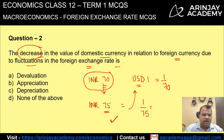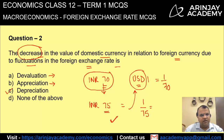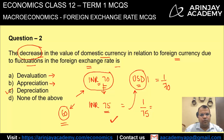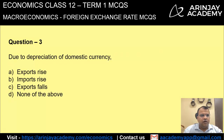This decrease in value is known as depreciation of the Indian currency compared to the US dollar. Devaluation is something which is done intentionally by the government. Appreciation is when the value of the Indian currency increases — meaning instead of 70 rupees, if you could buy 1 dollar for 60 rupees, then you need fewer rupees to buy a dollar, and that would be appreciation.